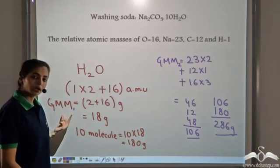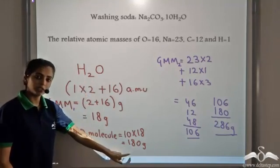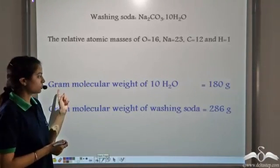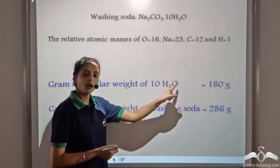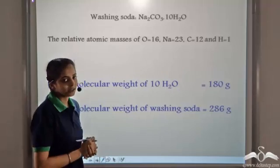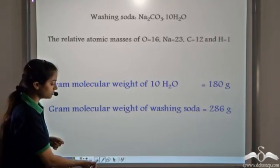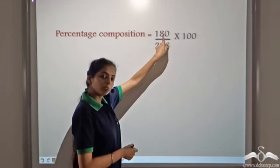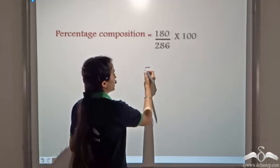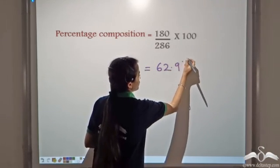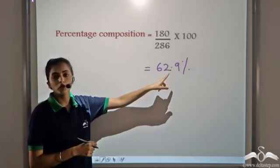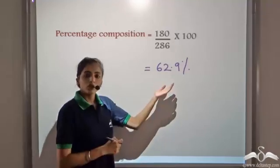So the gram molecular mass of the entire water of crystallization is 180 grams, and the gram molecular mass of washing soda is 286 grams. To calculate the percentage composition, we take the gram molecular weight of 10 molecules of water divided by the gram molecular weight of washing soda and multiply by 100. On calculating, we get 62.9 percent. This is the value that should be written on the bottle of washing soda.